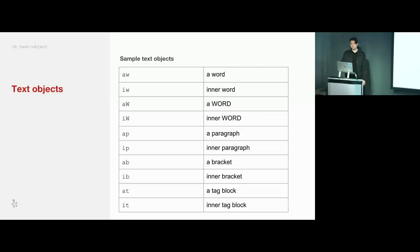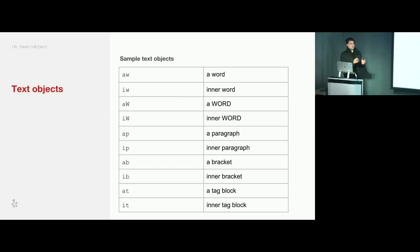One thing you might wonder is the difference between A and I. For tag blocks, inner tag represents the string inside your HTML tag block. For words, inner word represents just the word, whereas a word represents the word and the space that follows it. So you can do DAW to delete a word, which makes sure there's no extra whitespace remaining. Also, capital W means any stream of non-whitespace characters, whereas lowercase W represents what Vim considers keywords specifically, which differs based on your settings.